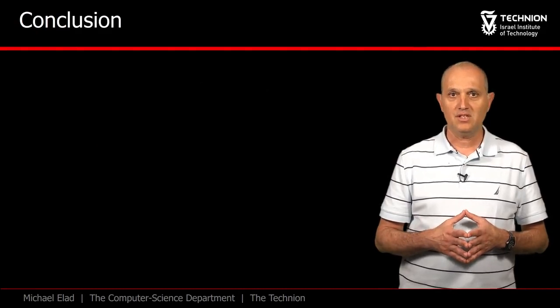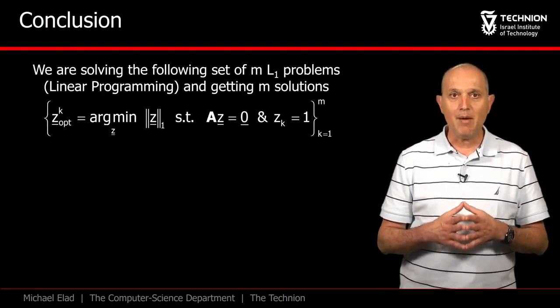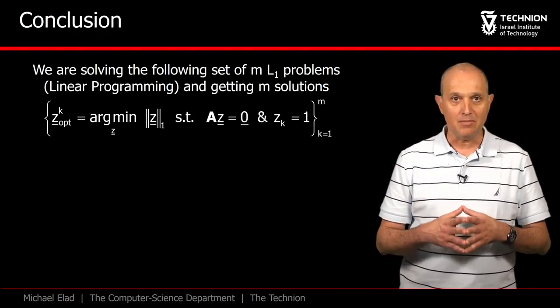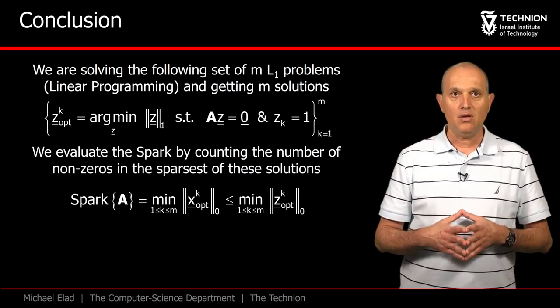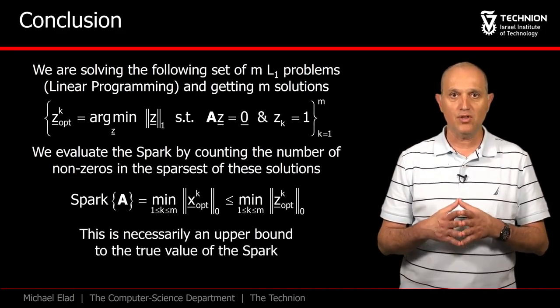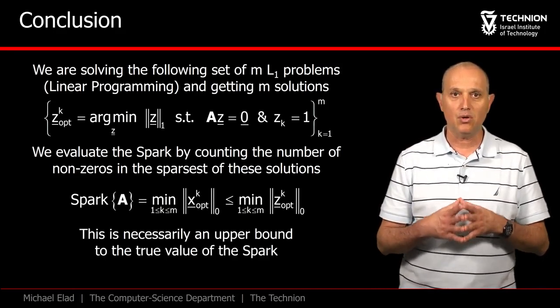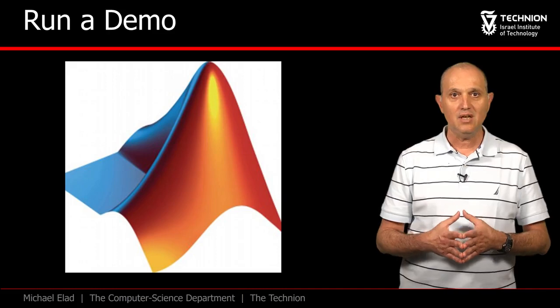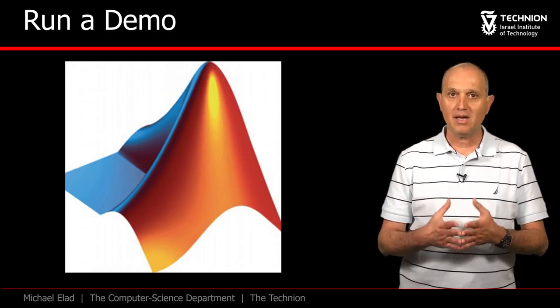We conclude and summarize. We should solve m linear programming problems and get their m solutions. Then, we should count the number of non-zeros in each of these solutions. The smallest of those is an upper bound on the spark. We proceed by demonstrating this with a MATLAB demo.